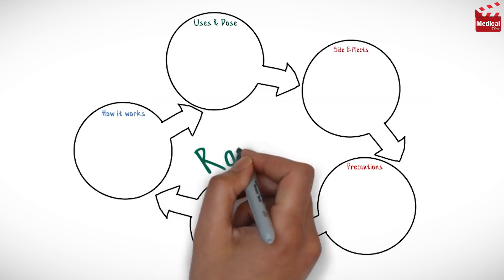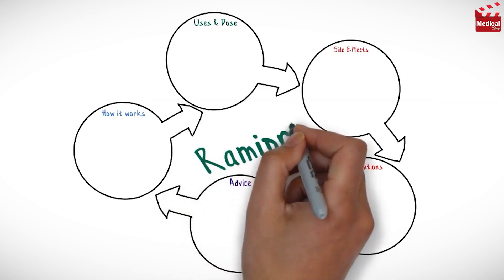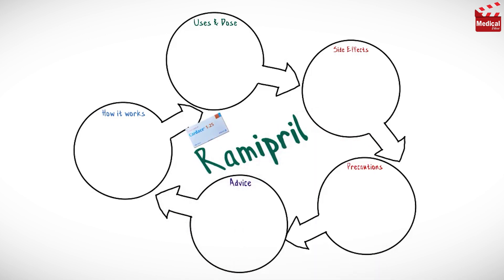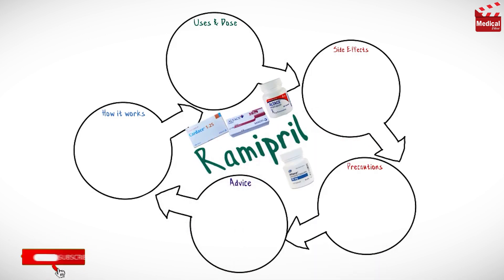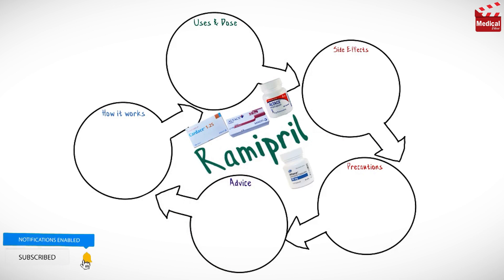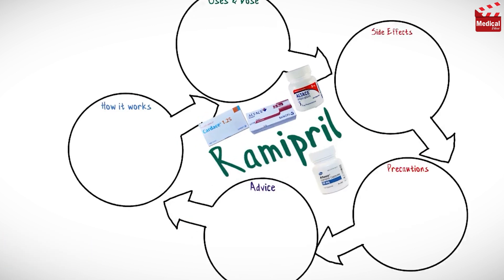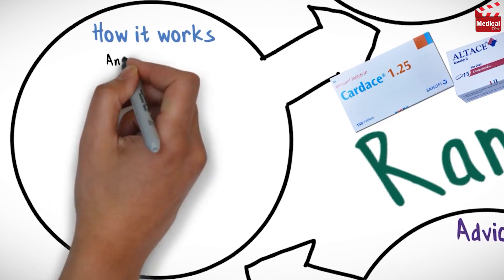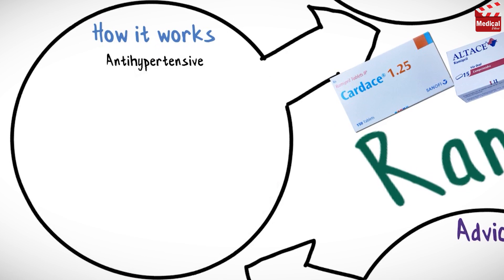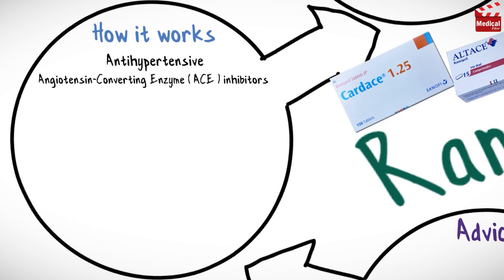In this video we'll briefly discuss what remipril is, how it works, what it's used for, the dose, side effects, contraindications and precautions. Remipril is an antihypertensive agent that belongs to a category of drugs called angiotensin converting enzyme inhibitors.